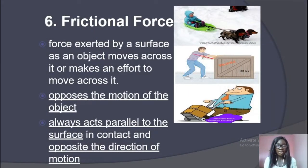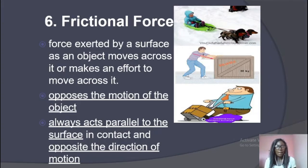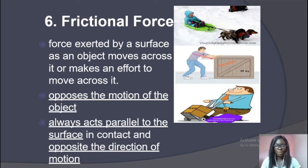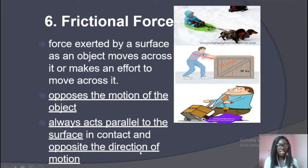Frictional force opposes the motion of an object. You are pushing an object forward and friction is dragging it backward, so you have to apply a higher force to overcome friction for the object to move. For example, a man pushing a scrubber on a rough floor has to apply a force greater than the friction for the scrubber to move. Frictional force always acts parallel to the surface in contact and opposes the direction of motion.